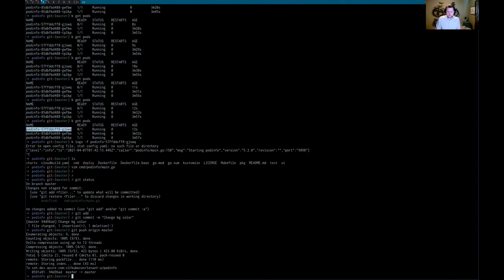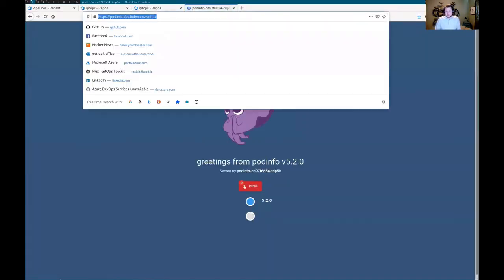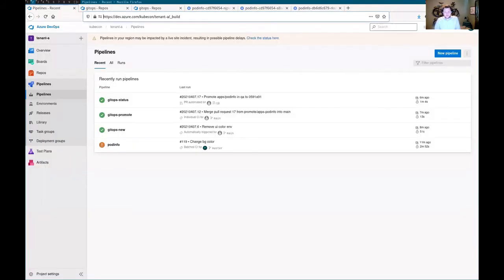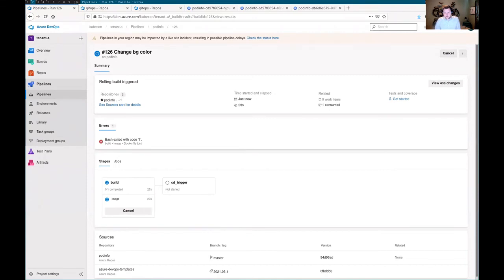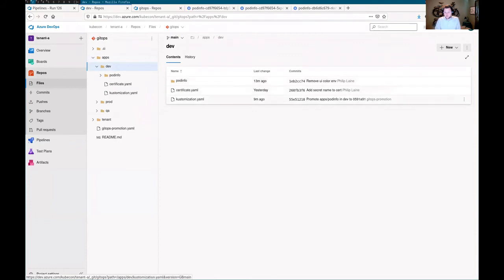If we get the ingress and we jump to our browser, this is currently running the older podinfo version. We can see this in QA and production. If we jump to pipelines, I think we're all familiar with this type of build scenario. We're just building a Docker image. What's different here is that we have our tenant A GitOps repository. Tenant A is the one deploying the podinfo application. If we jump into apps and dev, there is an override of the image tag here.